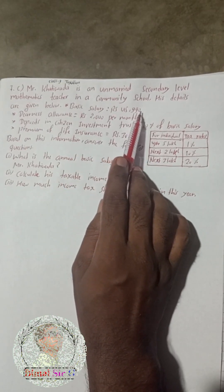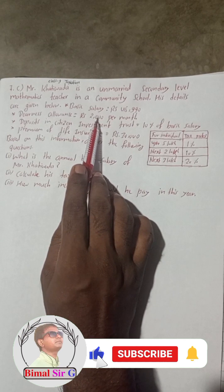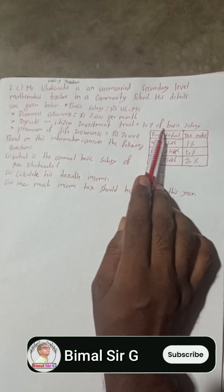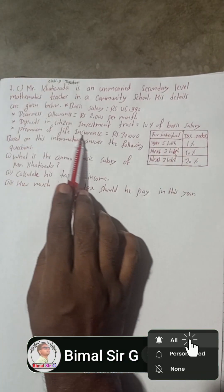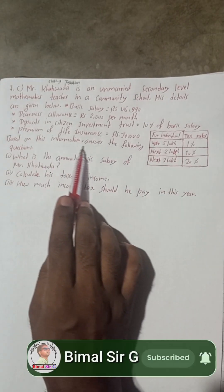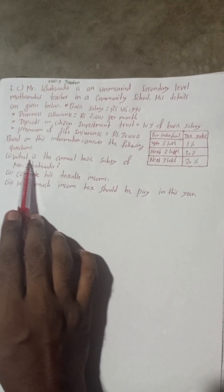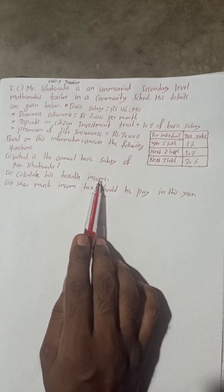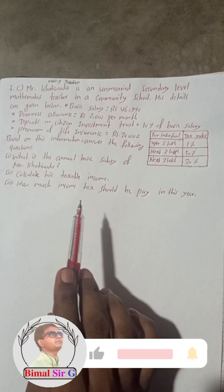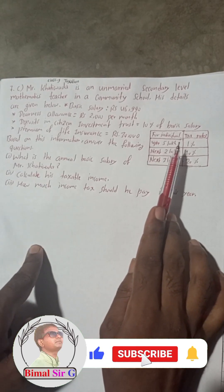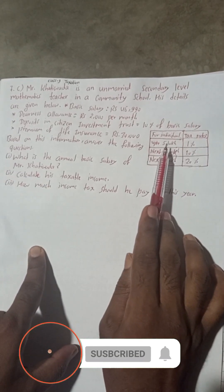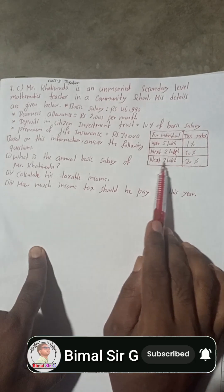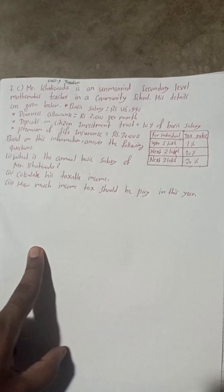Basic salary: Rs. 45,990. Dearness allowance: Rs. 2,000 per month. Deposits in Citizen Investment Trust equal to 10% of basic salary. Premium of life insurance equal to Rs. 30,000. The tax rates are: up to 5 lakh at 1%, next 2 lakh at 10%, and next 3 lakh at 20%.